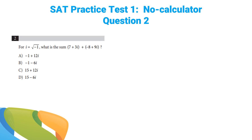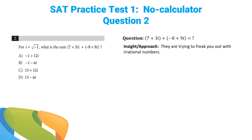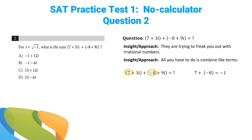Question number two — honestly, all they're trying to do is freak you out. For i equals the square root of negative 1, what is the sum of 7 plus 3i plus negative 8 plus 9i? All you have to do is combine the like terms. We combine the 7 and the negative 8, which is negative 1, and we combine the 3i and the 9i, which is 12i. So it's just negative 1 plus 12i. A is the correct answer.